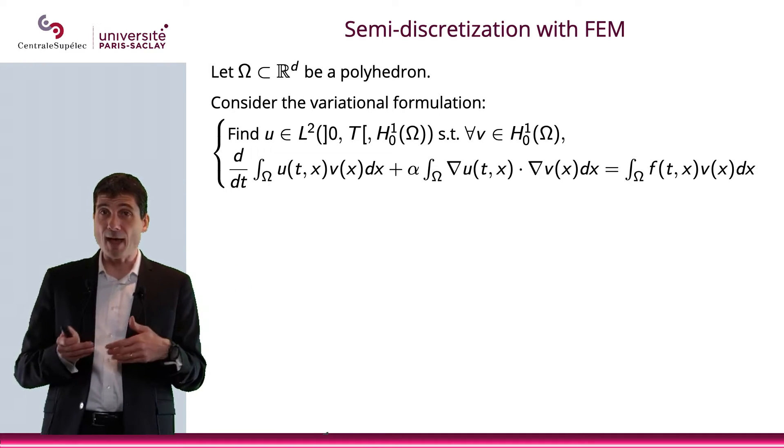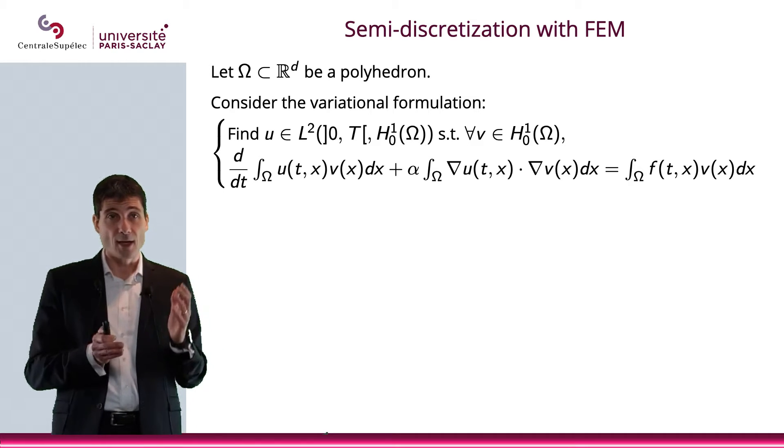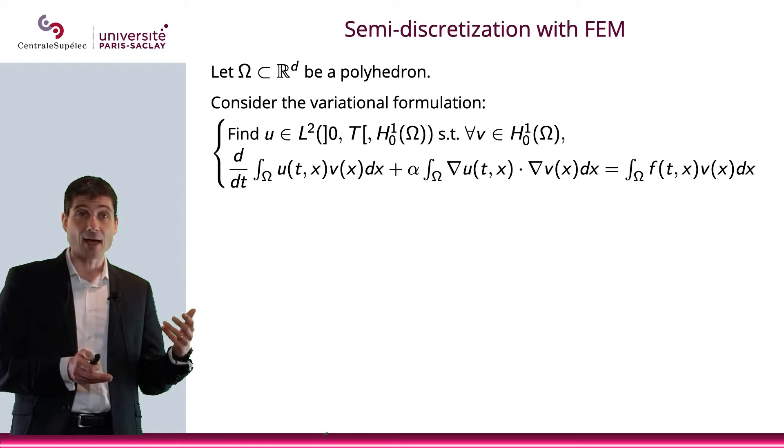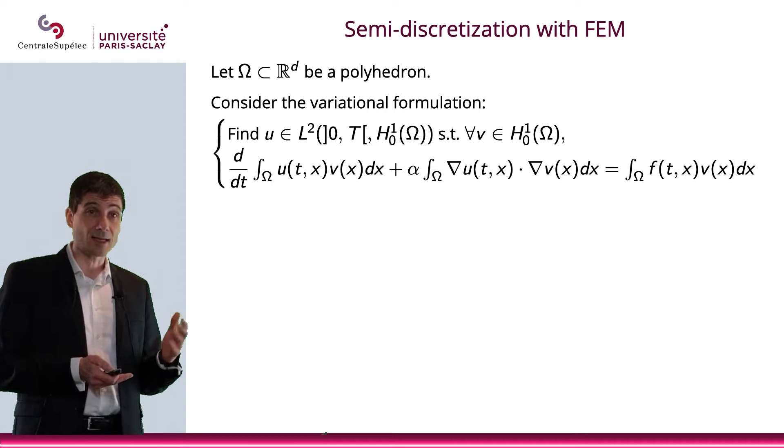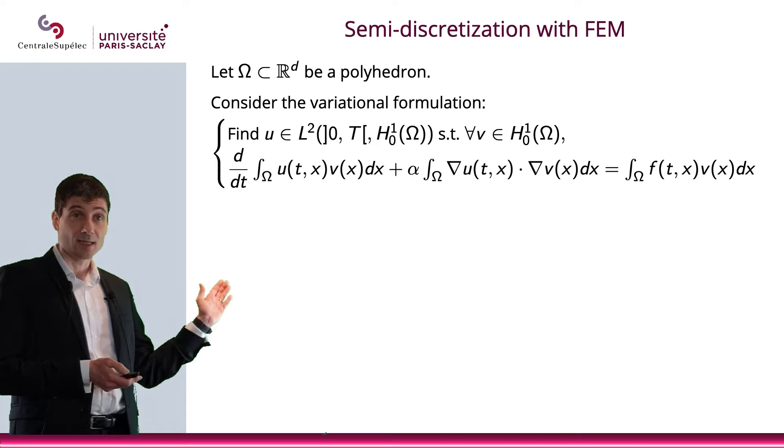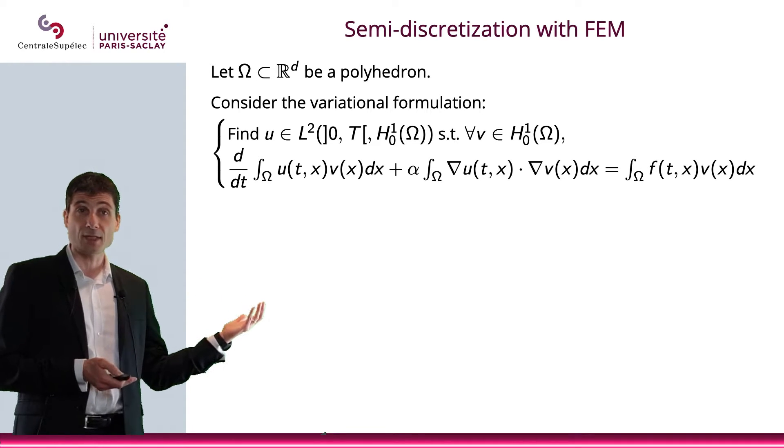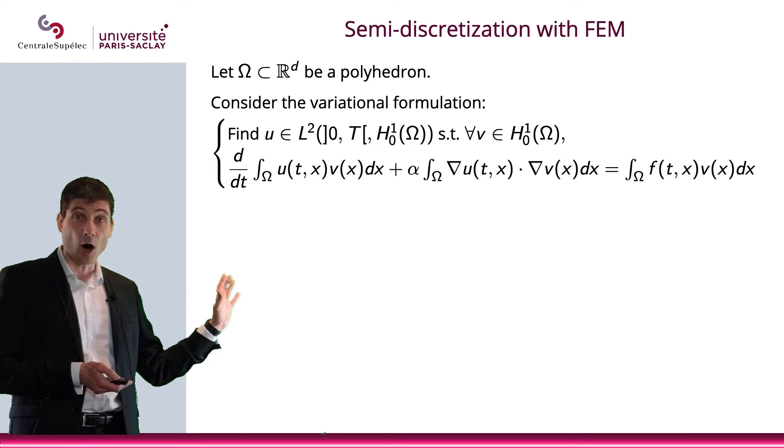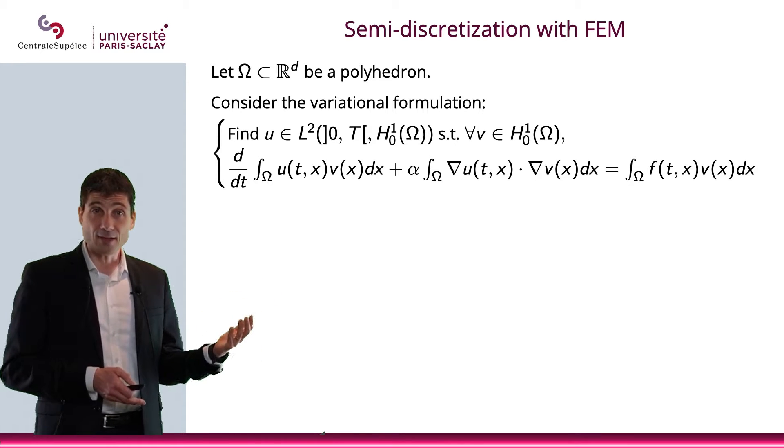So really it goes back to what we said earlier, we're separating the variables here. What we're doing is simply considering t as a parameter in our variational formulation, and what we are stating here is this variational formulation, which is going to be d/dt of the integral of u(t,x)v(x), and again it's the integral only over the space domain Ω, plus α,